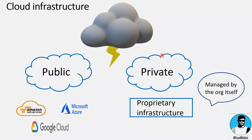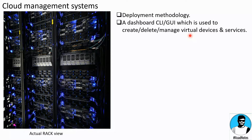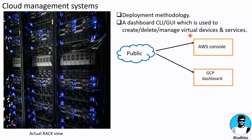Any cloud, whether public or private, actually looks like this — it needs a cloud management system to manage the whole bunch of hardware. The CMS, or cloud management system, consists of two parts: a deployment methodology and a dashboard, which is either a CLI or a GUI, used to create, delete, and manage virtual devices and services. In public clouds we have dashboards like the AWS console and GCP dashboard.